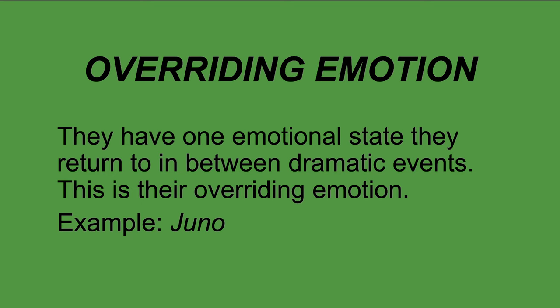Overriding emotion: characters have one emotional state they return to between dramatic events — this is their overriding emotion. Think of Juno — the way she talks to her friends versus her parents is quite different. She's very sarcastic and kind of monotone with her friends, especially her boyfriend. But later, when she's almost eight months pregnant and finds out her boyfriend is going to prom with another girl, she talks differently. She tends to be meaner when she's angrier, and drops the sarcasm when talking to her parents about her pregnancy.